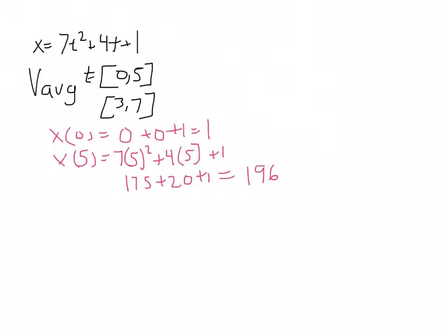Therefore, the average velocity is going to be equal to the change in displacement over the change in time, which equals 196 minus 1 in meters all over 7 minus 3 in seconds.